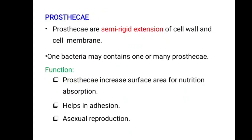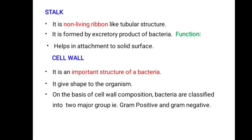Next are prosthecae. Prosthecae are semi-rigid extensions of the cell wall and cell membrane. One bacterium may contain one or many prosthecae. The functions of prosthecae are to increase the surface area for nutrient absorption and also to assist in sexual reproduction. The next bacterial component is the stalk — a non-living, ribbon-like tubular structure formed by excretory products of bacteria. The function of the stalk is to help in attachment to solid surfaces.